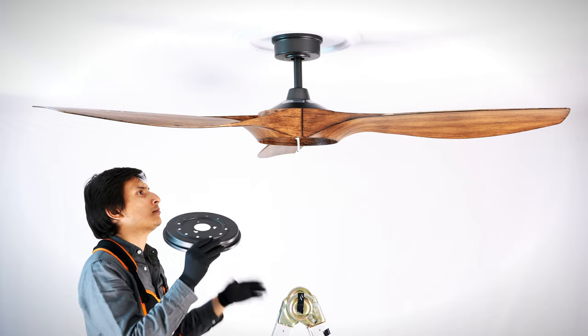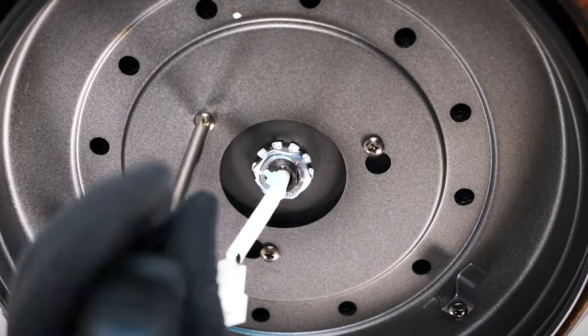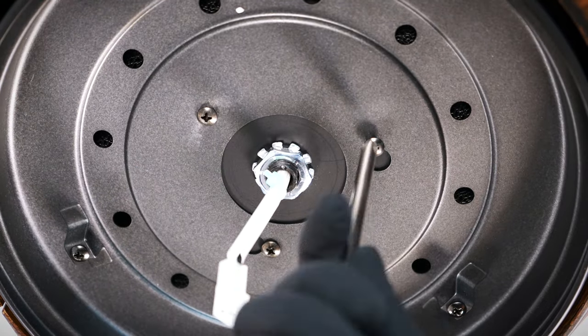Bring the mounting plate up to the fan. Align and twist over the loose screws, then insert the removed screw and tighten all screws securely.